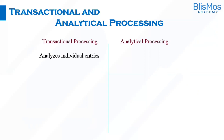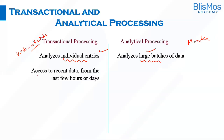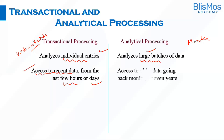Transactional processing deals with individual entries — Vivek handled no more than 10 records at a time. In analytical processing, we analyze large batches of data, like Monica analyzing five years of data. In transactional processing we access recent data, maybe from the last few hours or days. In analytical processing, we access older data — months or even years.